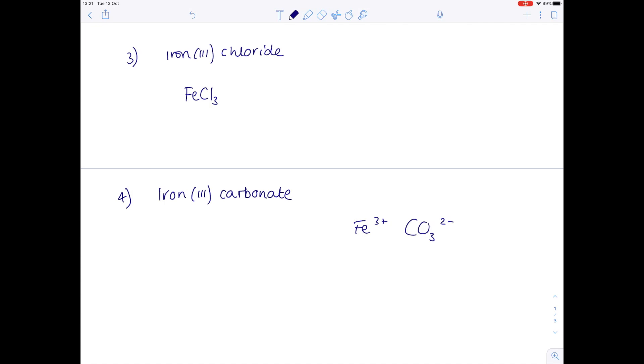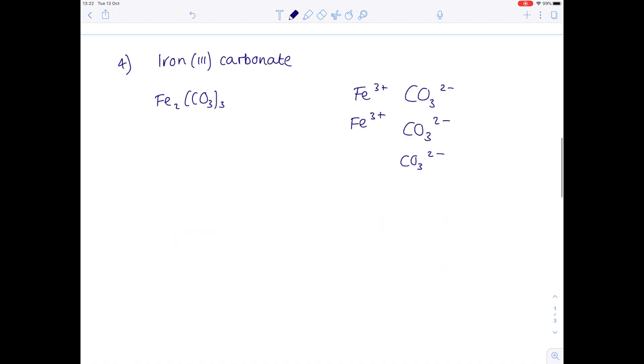I'm going to do my working here. I need to make sure that my charges are balanced, which means that effectively I need three carbonate ions for every two iron(III) ions. So my final answer here is Fe2(CO3)3. Don't forget your brackets. And the final one, aluminium oxide.